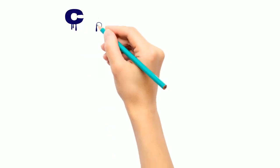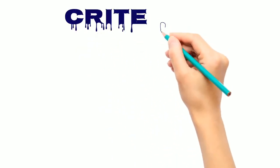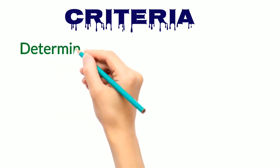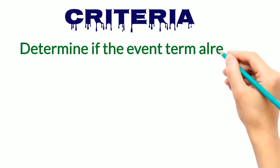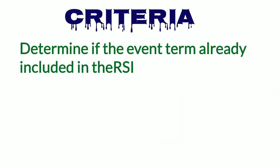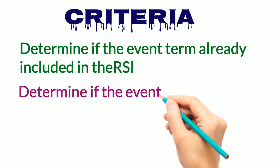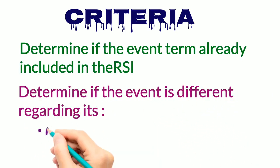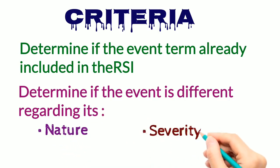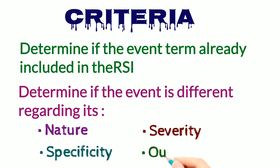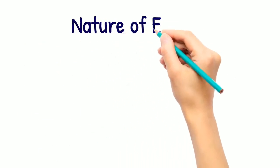Determining whether a reported event is expected or not is a two-level process. First, determine if the event term — checking for synonyms as well — is already included in the RSI (Reference Safety Information) document. Second, determine if the event is different regarding its nature, severity, specificity, and outcome. We will see each criterion briefly.